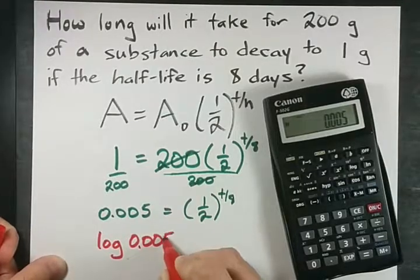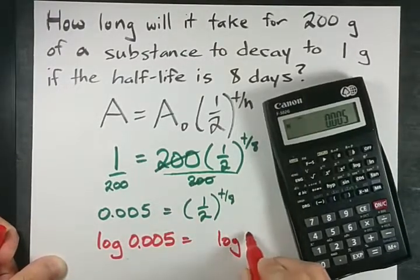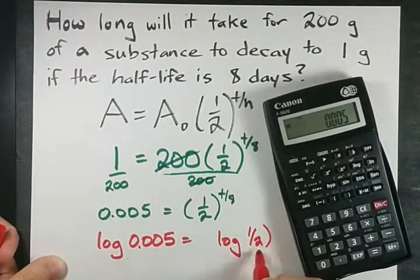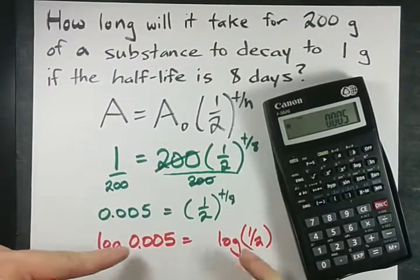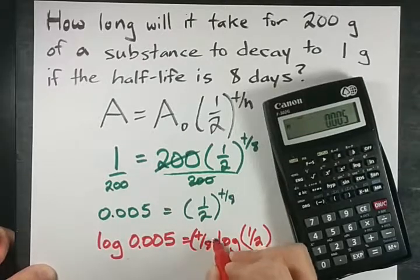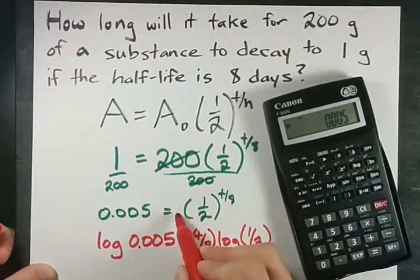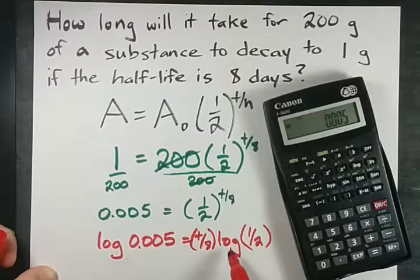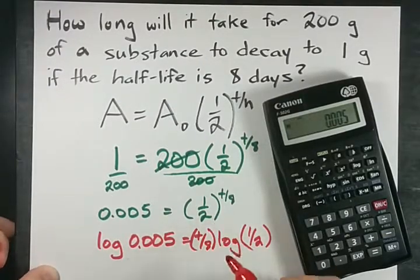The log of the left side equals the log of the right hand side. And remember when you do that you can bring the exponent down and multiply it right in front. t over 8 times the log of one-half is what this converts to.